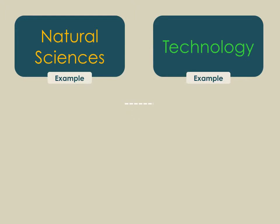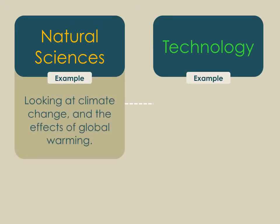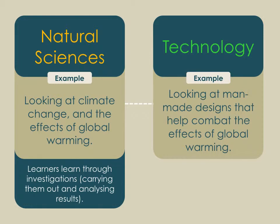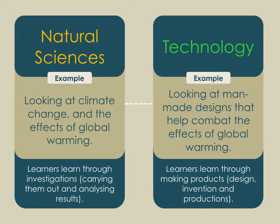For example, in natural sciences learners might study climate change and the effects of global warming — learning through investigations, carrying them out and analyzing results. In technology, they look at man-made designs that could help combat the effects of global warming, learning through making products, design, inventions, and productions. This shows the connection between the two, and we must teach them with that connection in mind.